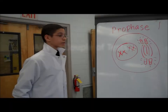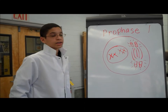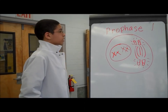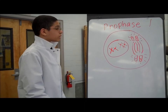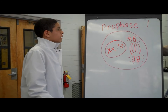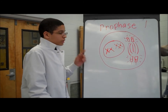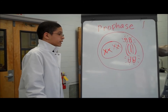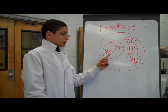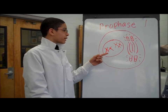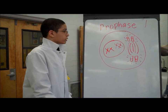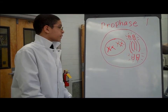It's meiosis. It's a process that starts with one cell that turns into four cells. The first stage is prophase one, and in this stage, spindle fibers appear, and the nucleolus and the nuclear membrane disappear.